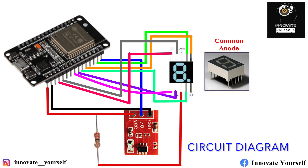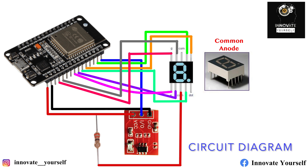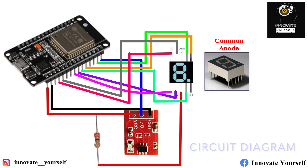Since I'm using a common anode seven segment display, I've placed a resistor between the 3.3V line and the common anode pin. The remaining segment pins — A through G — are connected to the ESP32. These pinouts show exactly how the connections have been made, and I hope it's now clear.